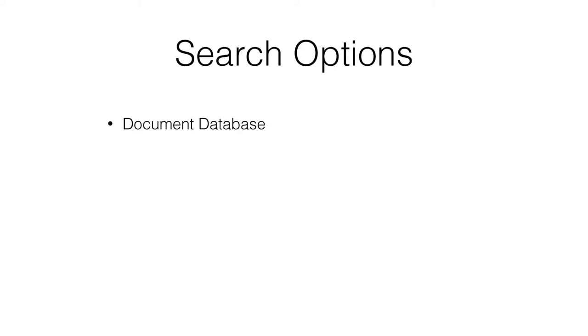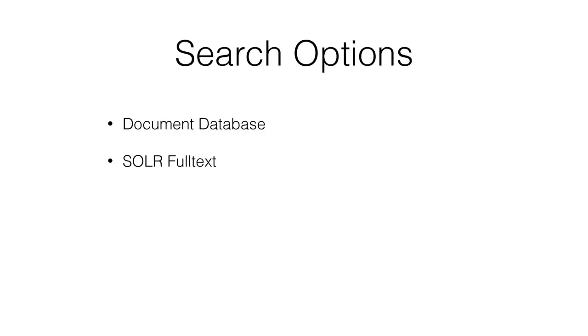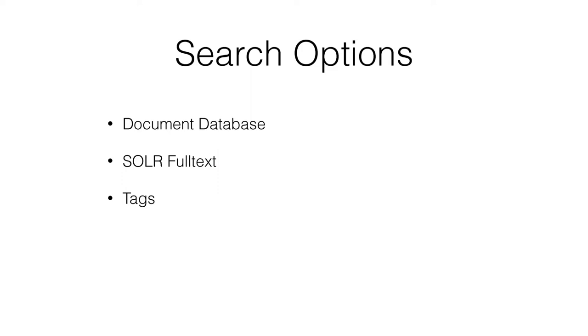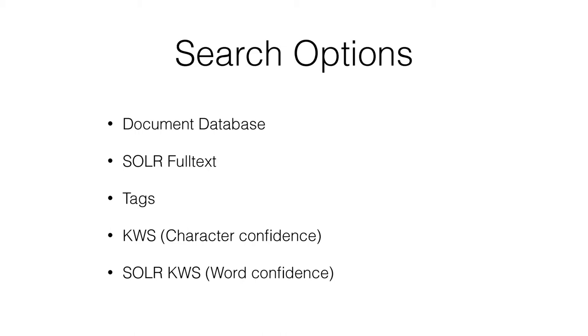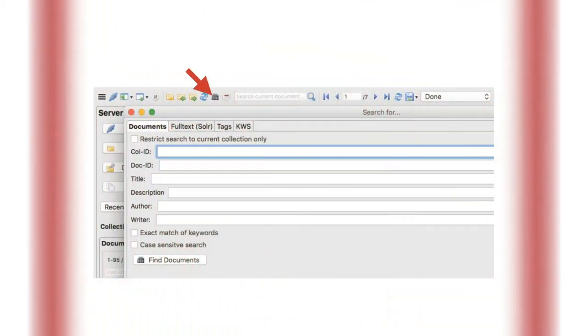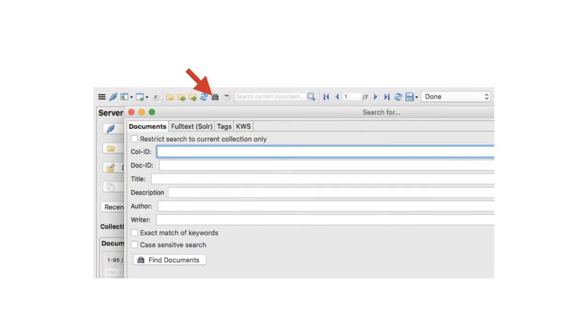What are the current search options we offer? The first is a basic database document search, which was already there before I joined — the most simple type of search. Then we integrated something called the Solr full-text search, which allows you to search transcriptions across many different collections. We also added the functionality to add tags to transcriptions and a search capability for those. Most recently we added a keyword spotting tool, which started out as a character-level tool. And finally we have Solr keyword spotting, which is what you can see working today.